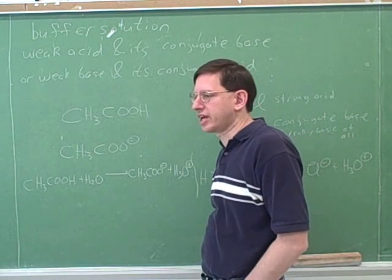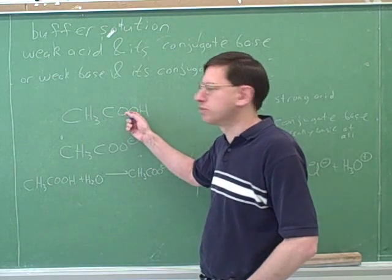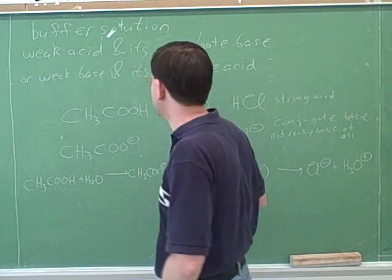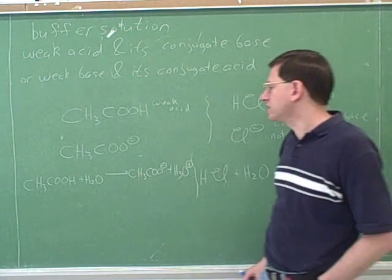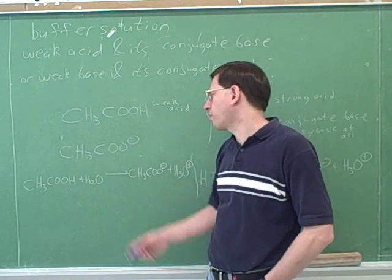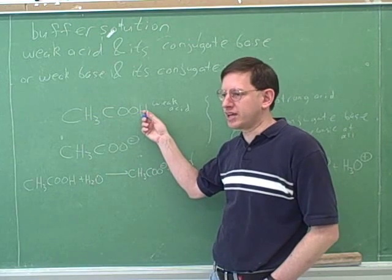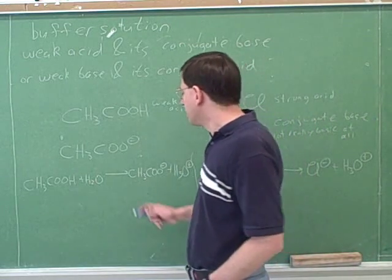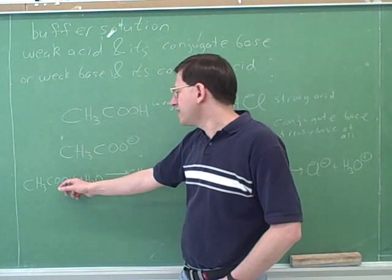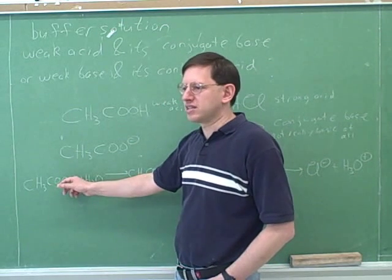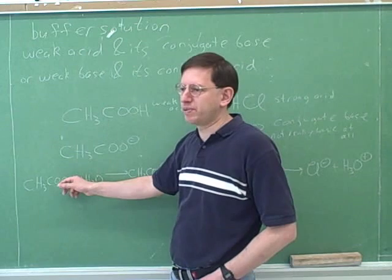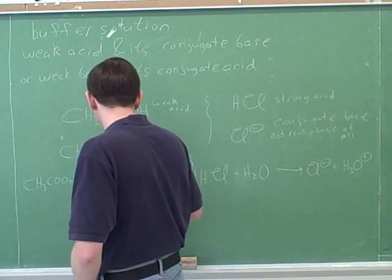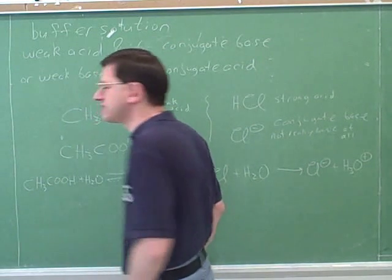Is this reaction going to go to completion or to equilibrium? Equilibrium — because we know this is just a weak acid. A weak acid is one that, when it reacts with water, deprotonates partially but not totally. Therefore, we're not going to get rid of all of the original acetic acid, and that means this is an equilibrium.